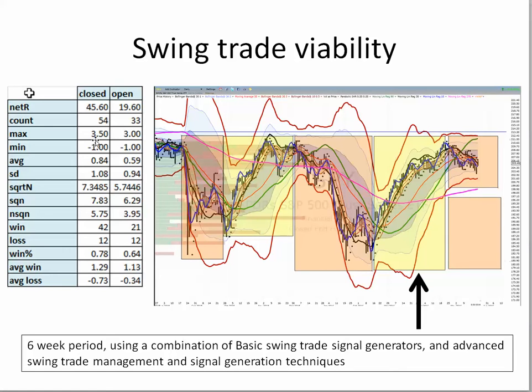But when markets move like this, these are the kinds of results that should happen when you apply these rules. There were a total of 54 trades closed. The net R out of this period was 45R and some change from 54 trades. There were still 33 trades open at that time. Some of those were double positions, so it wasn't 33 separate positions to manage.